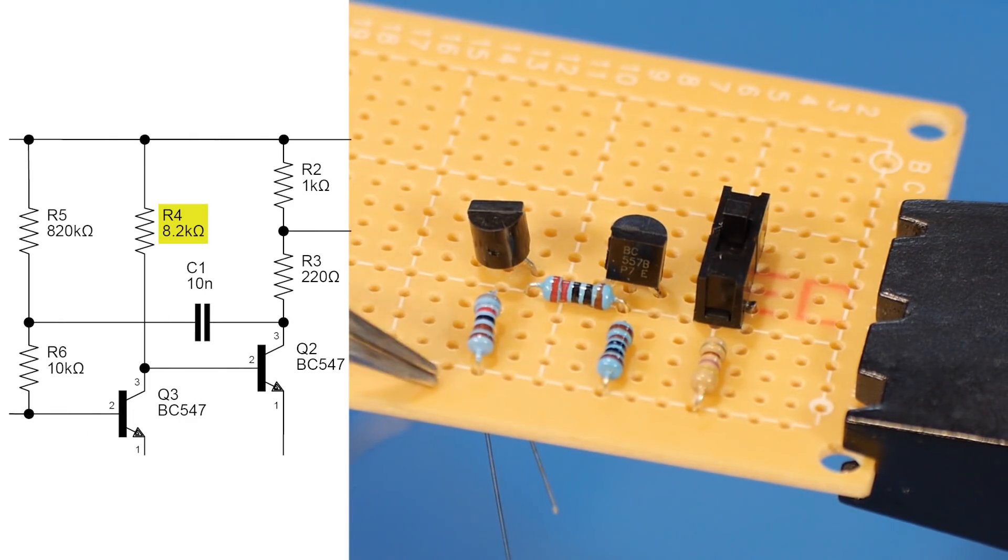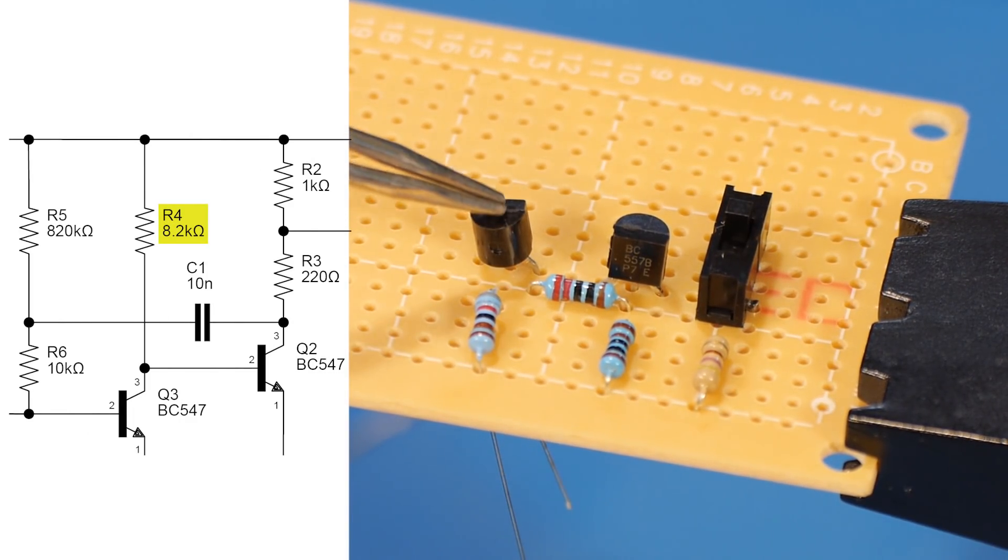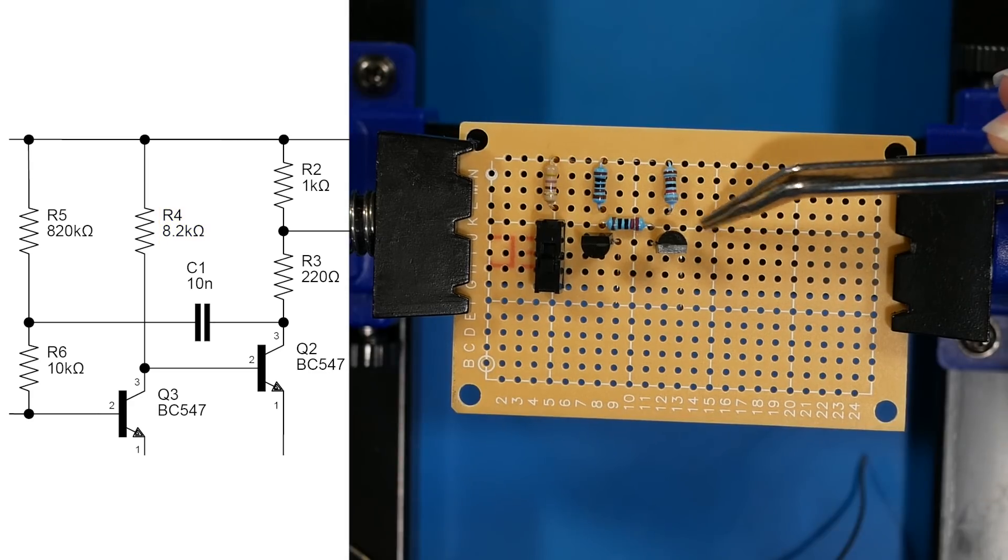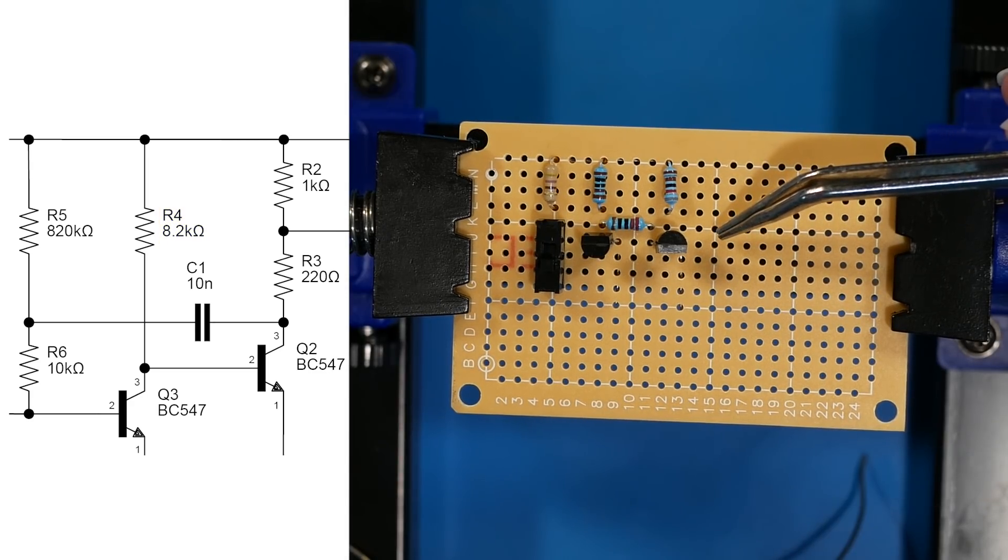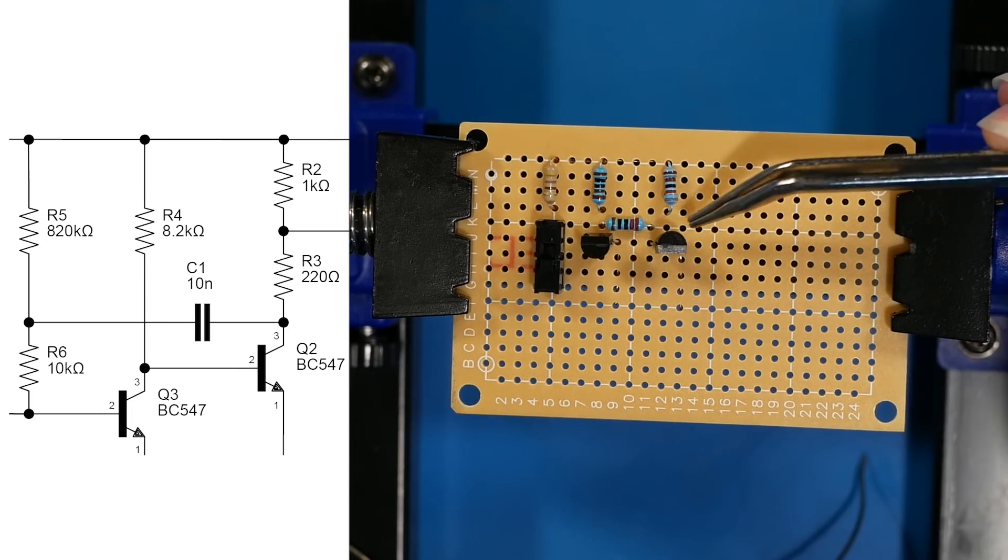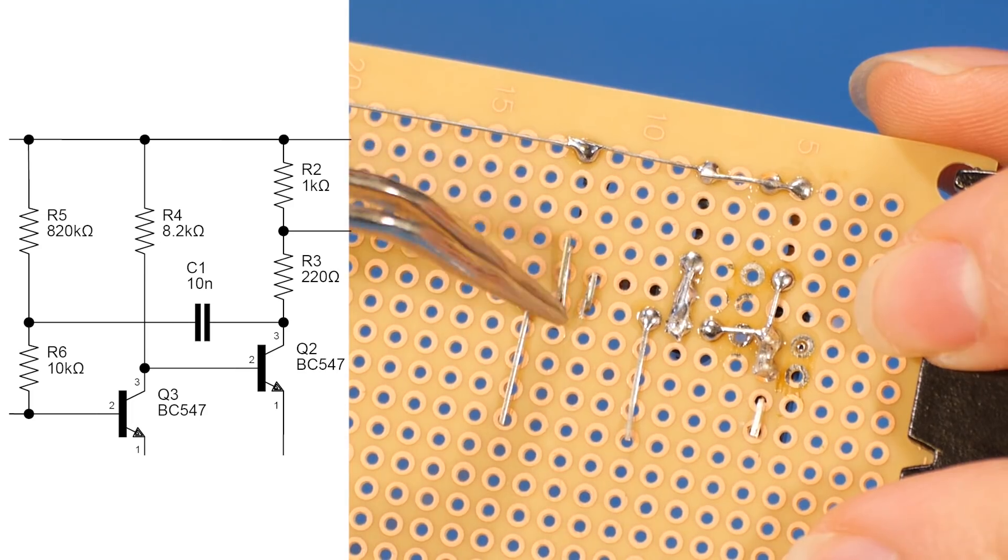R4 connects to the power plane up here and also pin two, the base of Q2. And again, I'm leaving space so that we can connect that third transistor in there. So I'll solder that together.